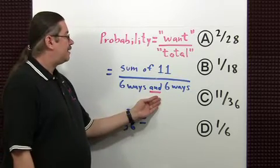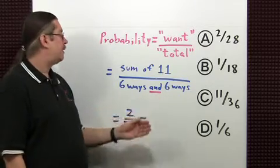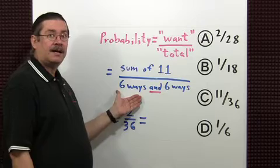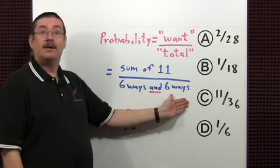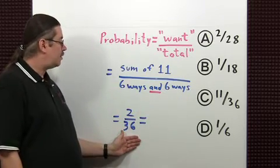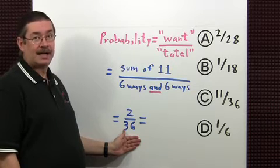In mathematics, the word 'and' tends to mean multiply. So there are six ways for one die and six ways for the other. Six times six gives us 36 total possible ways of rolling two dice.